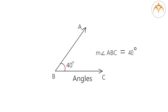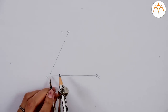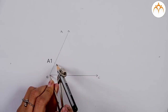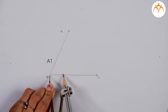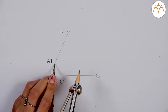We will first learn to construct the angle bisector of angle ABC with the help of a straight edge and a compass. Take some distance from the vertex B with the help of a compass and draw an arc on the ray BA; name the point as A1. Keeping the distance the same from vertex B, draw an arc on the ray BC as well; name the point as C1.